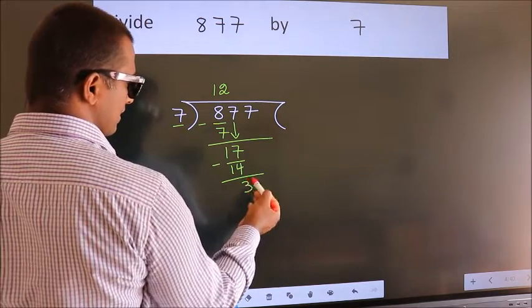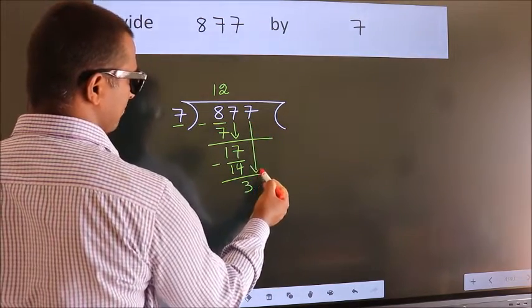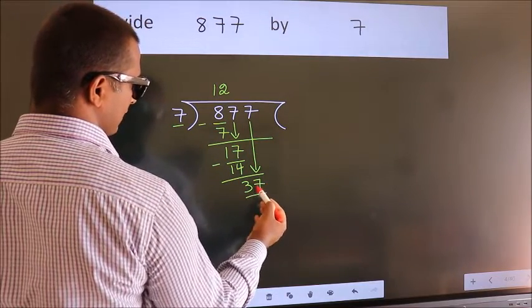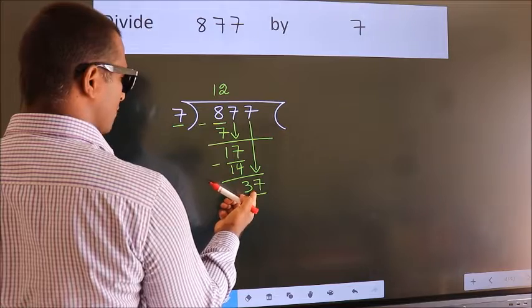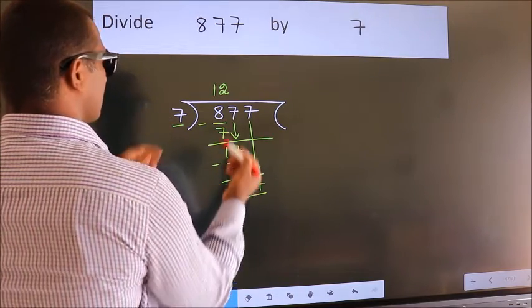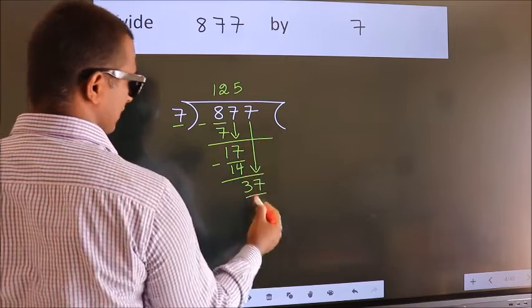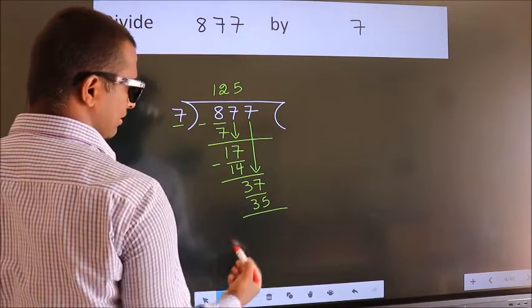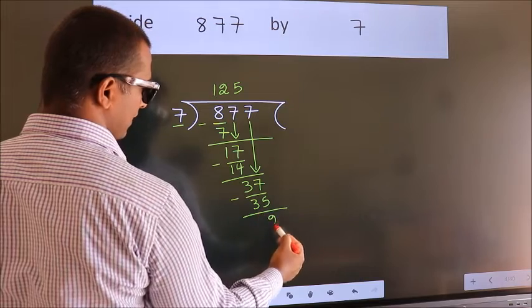After this, bring down the beside number. So 7 down, so 37. A number close to 37 in 7 table is 7 fives, 35. Now we subtract. We get 2.